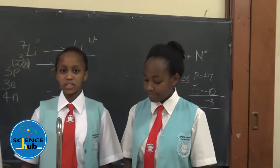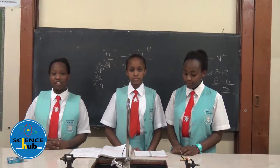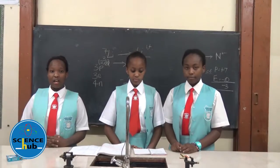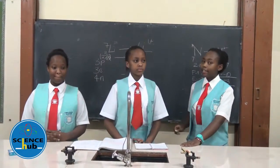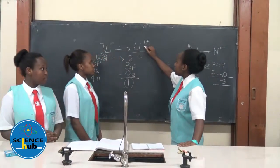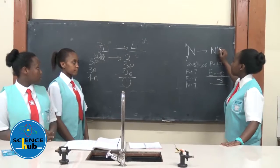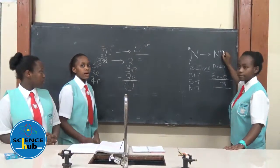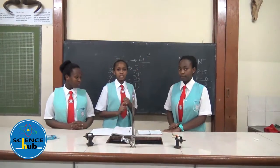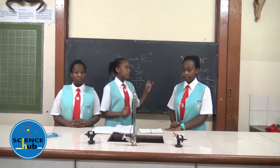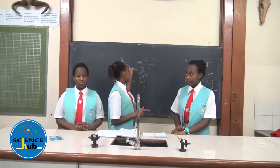Moving on to radicals. A radical is a group of atoms which have an extra charge and exist and react as a unit during chemical reactions. Using the examples given, the oxidation number for lithium will be 1 positive, while the oxidation number for nitrogen will be 3 negative. The oxidation number is the same as: 1, the group which the element forming the ion belongs to, and 2, the number of electrons lost from the atom.